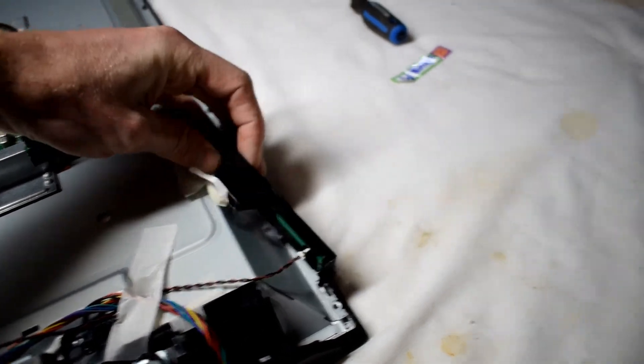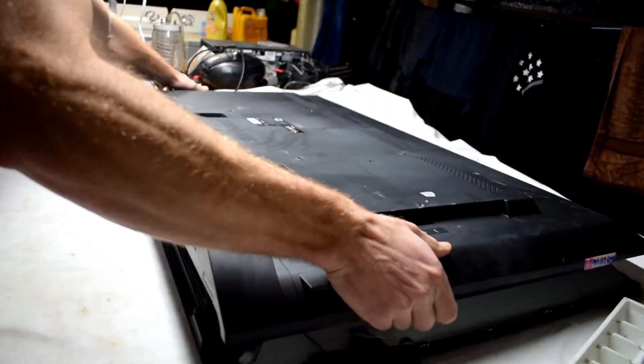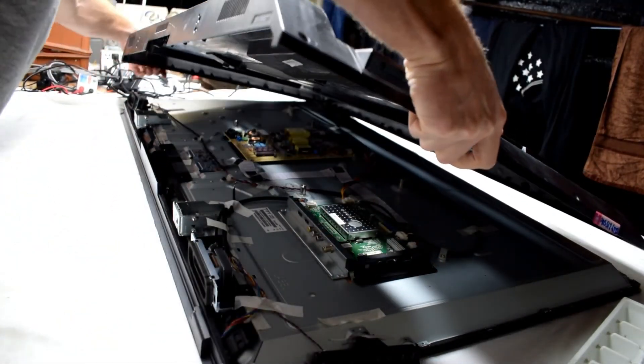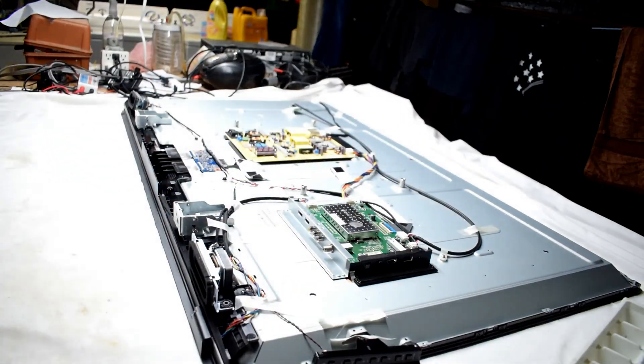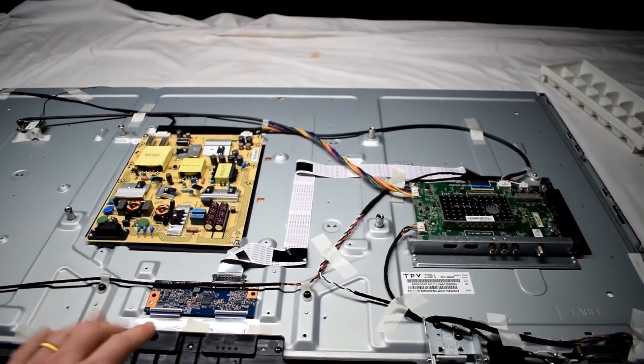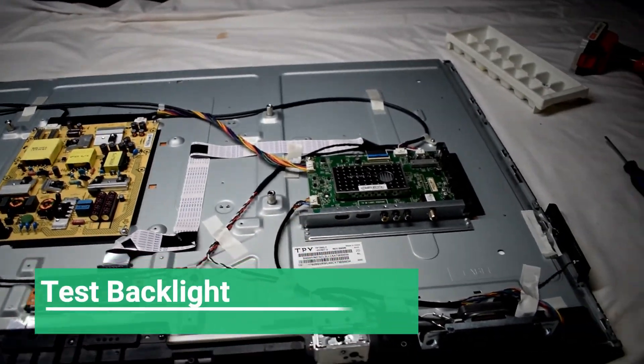This is what the power button looks like. Now, with the back case off, we can see the different parts. There's your power supply board, your T-con board, and your main board.